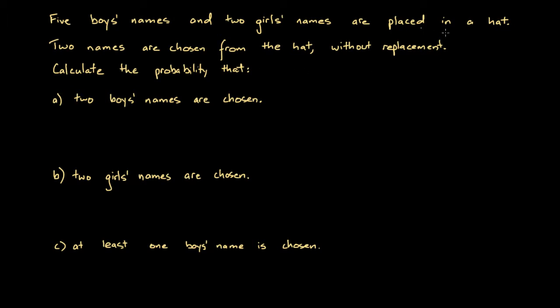First, let's look at this term 'without replacement.' All it means is that once we take the first name out of the hat, we leave that name outside when we go in to pick the second name. We don't pick a name, put it back, and then pick a second name. With replacement, there's a possibility we might get the same name twice, but 'without replacement' ensures we don't.